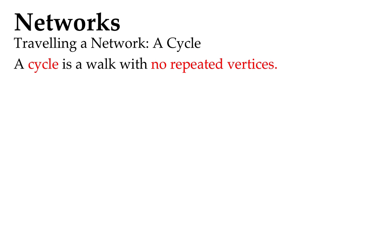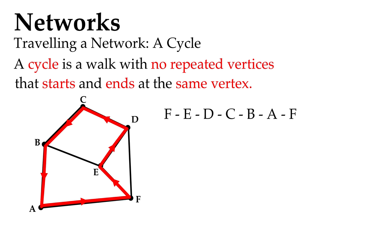A cycle is a walk with no repeated vertices. It starts and ends at the same vertex. Don't visit any vertices twice or you don't have a cycle. So that's a cycle there, all the way around.